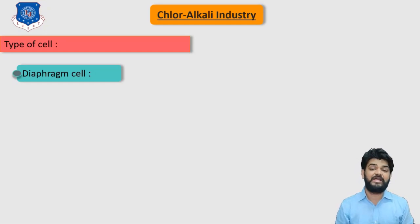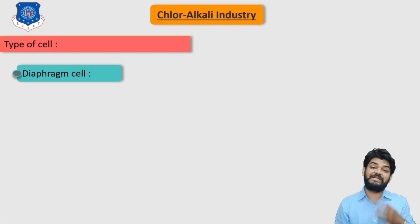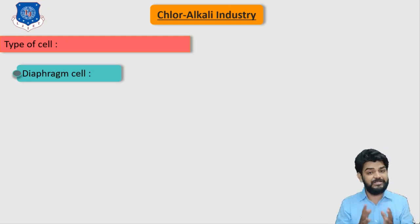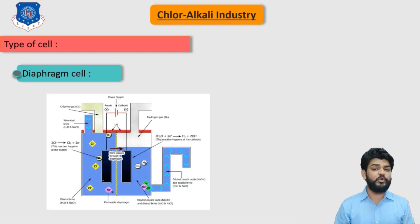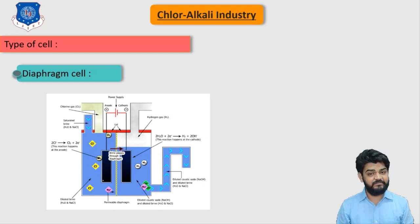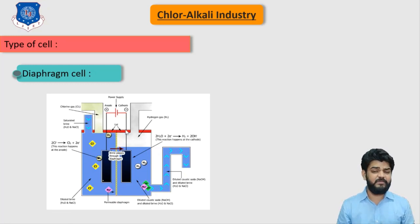There are three different types of cells used in the industries: the first one is the diaphragm cell, then the mercury cell, and lastly the membrane cell. Let's start with the diaphragm cell. As you can see on the screen, this is the schematic diagram of the diaphragm cell. At the center we have one diaphragm which is responsible for the separation of two different compartments.